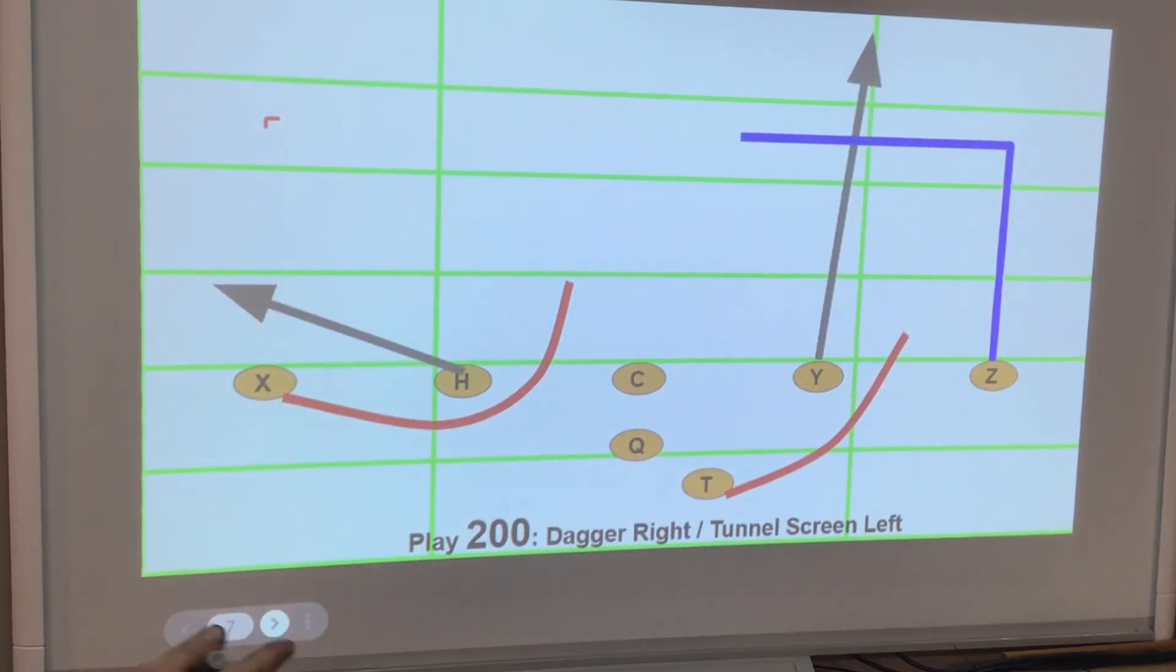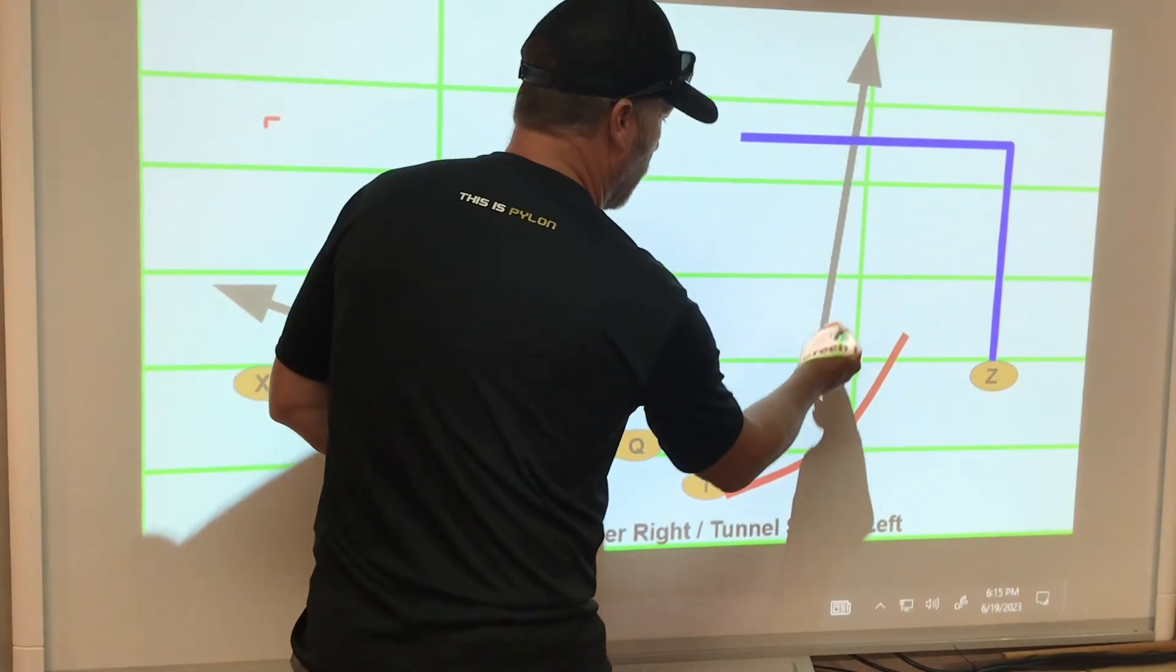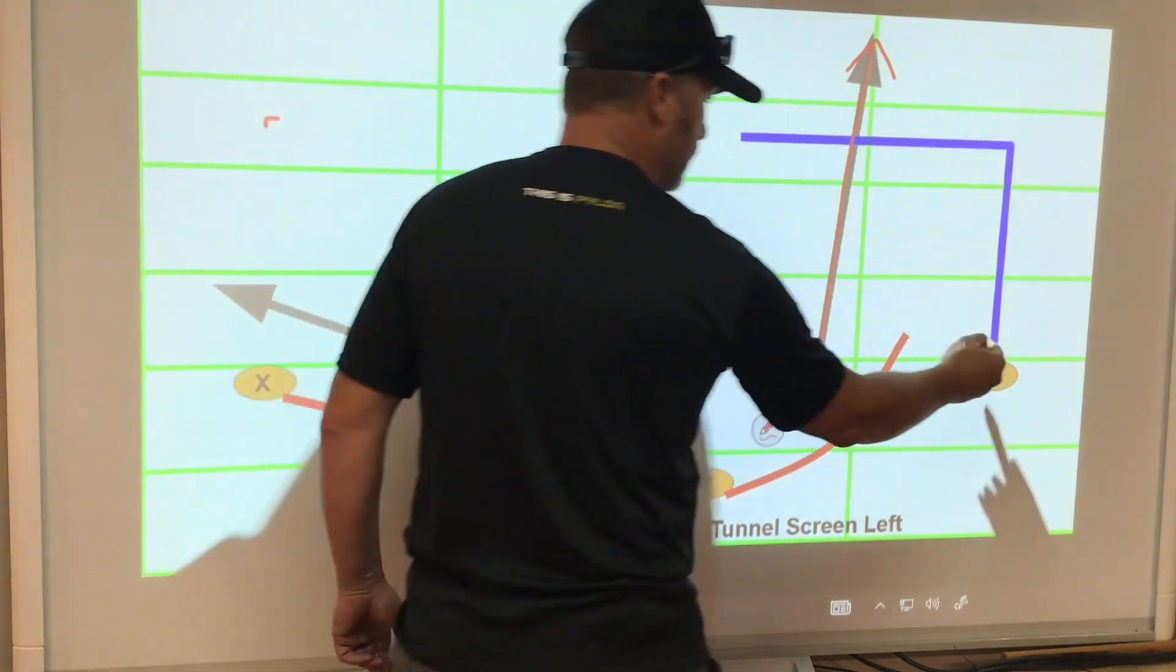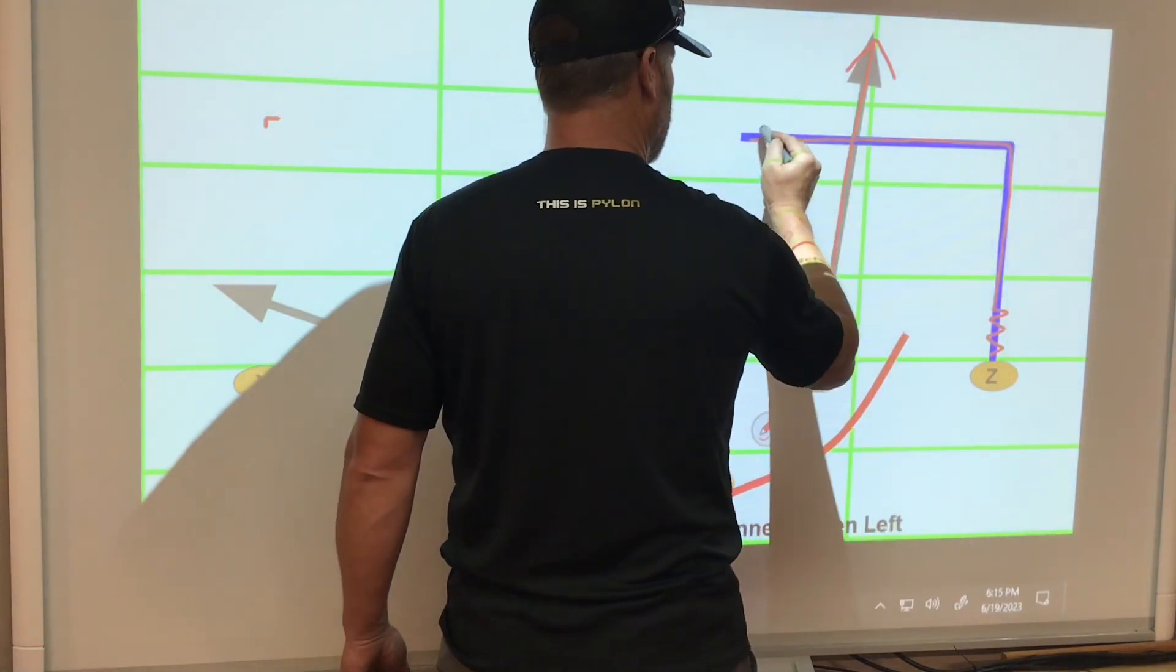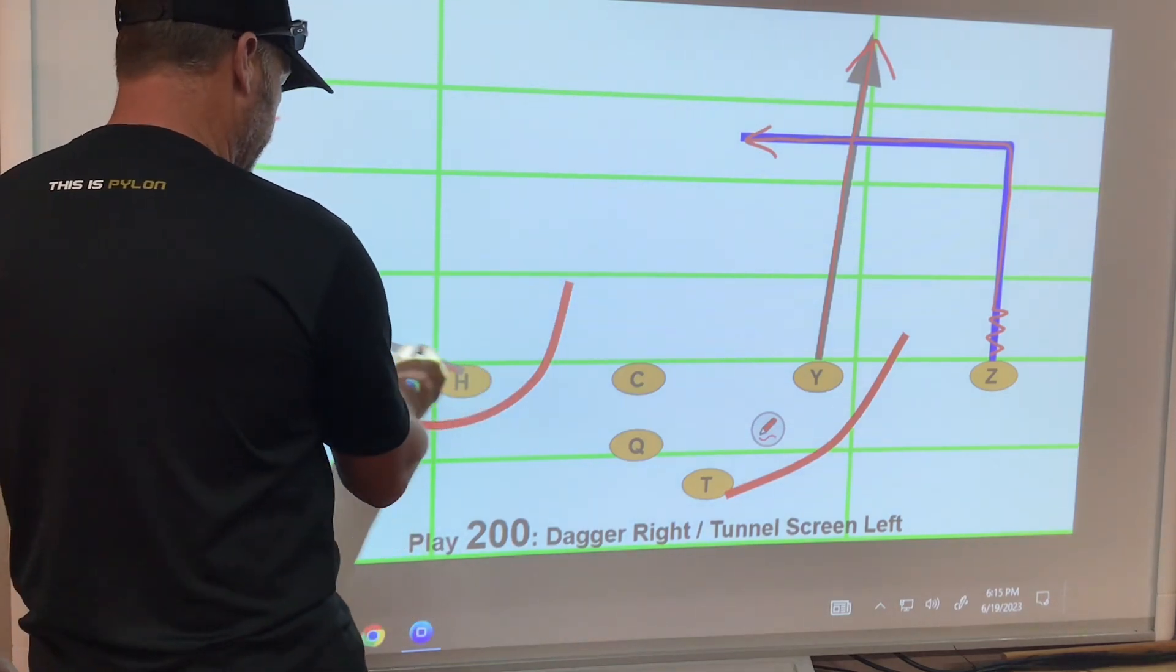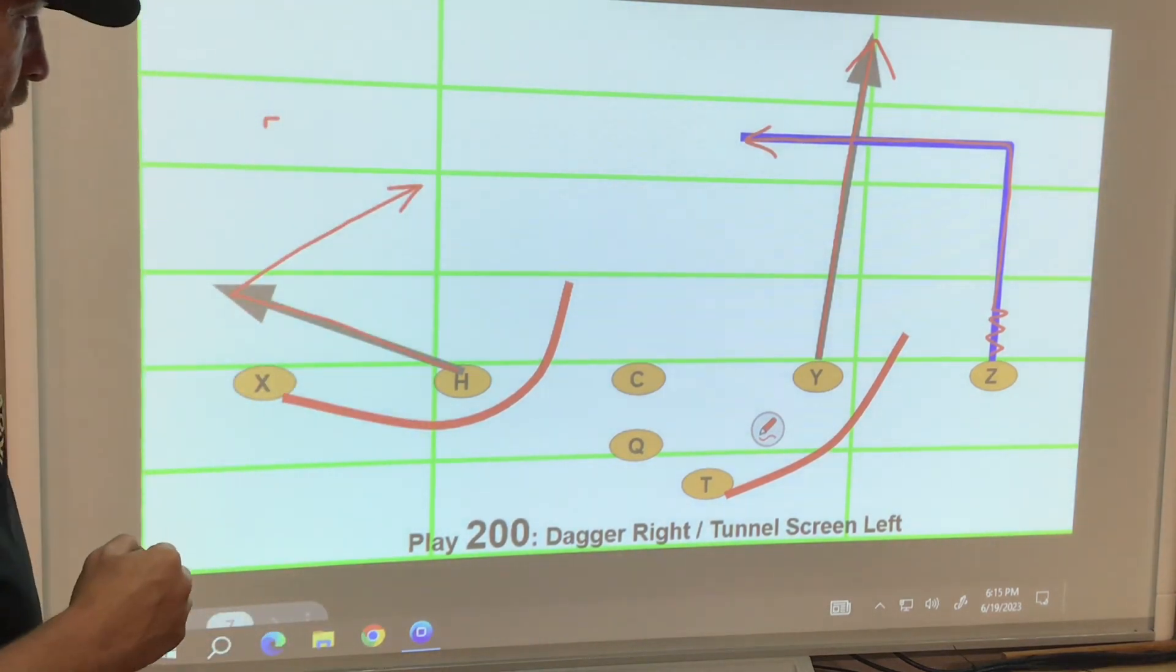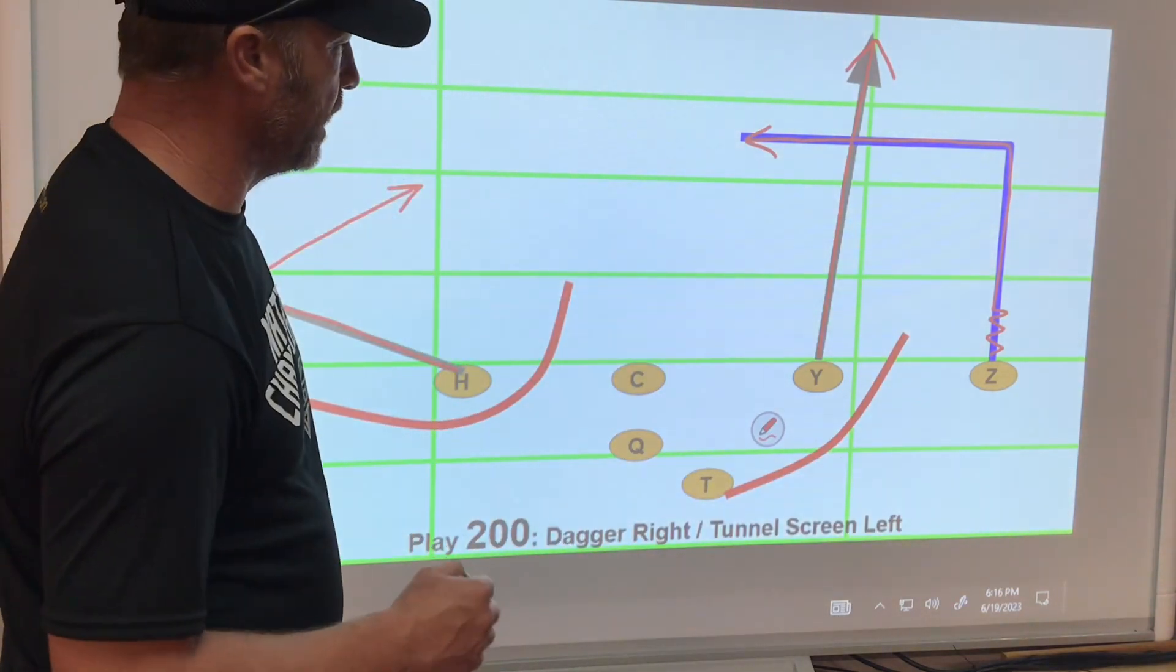So the same adjustment on play 200. Again, it's just a pacing adjustment. This Y needs to sprint on the goal route and draw that safety. The Z can go into a walking start and then sprint and run their route. Nothing changes for the X. It's still that tunnel screen. The H is still rubbing, but then coming back, coming alive for the quarterback as an option.